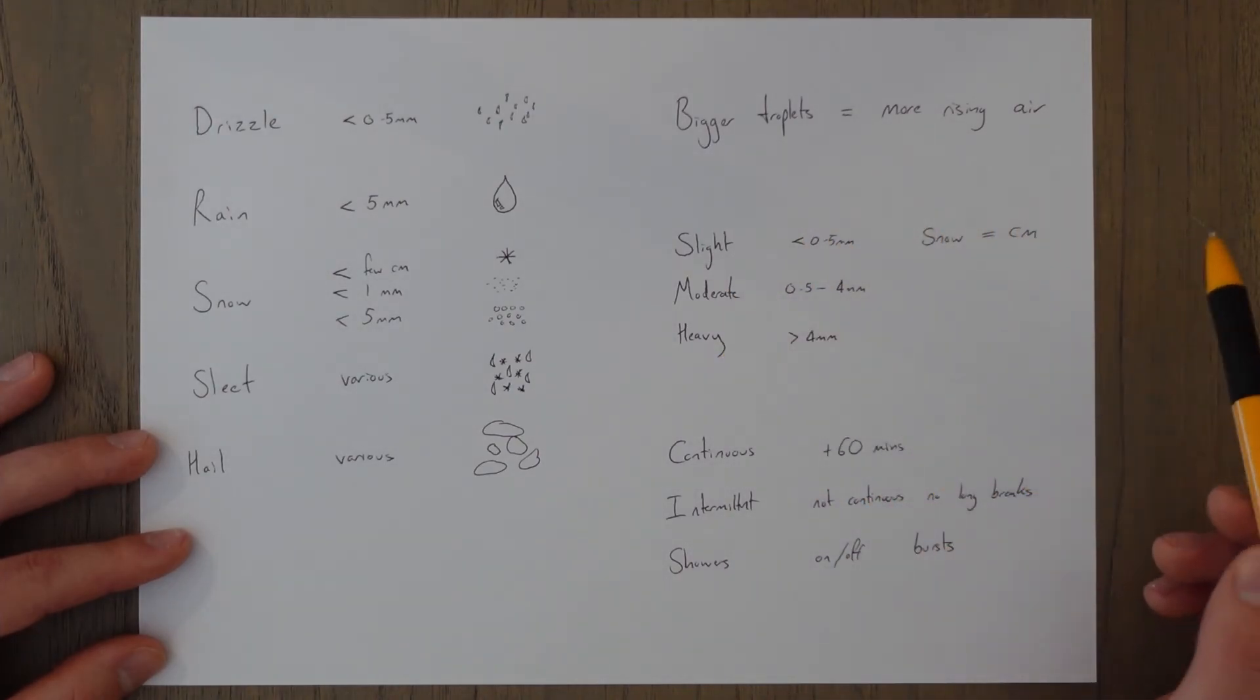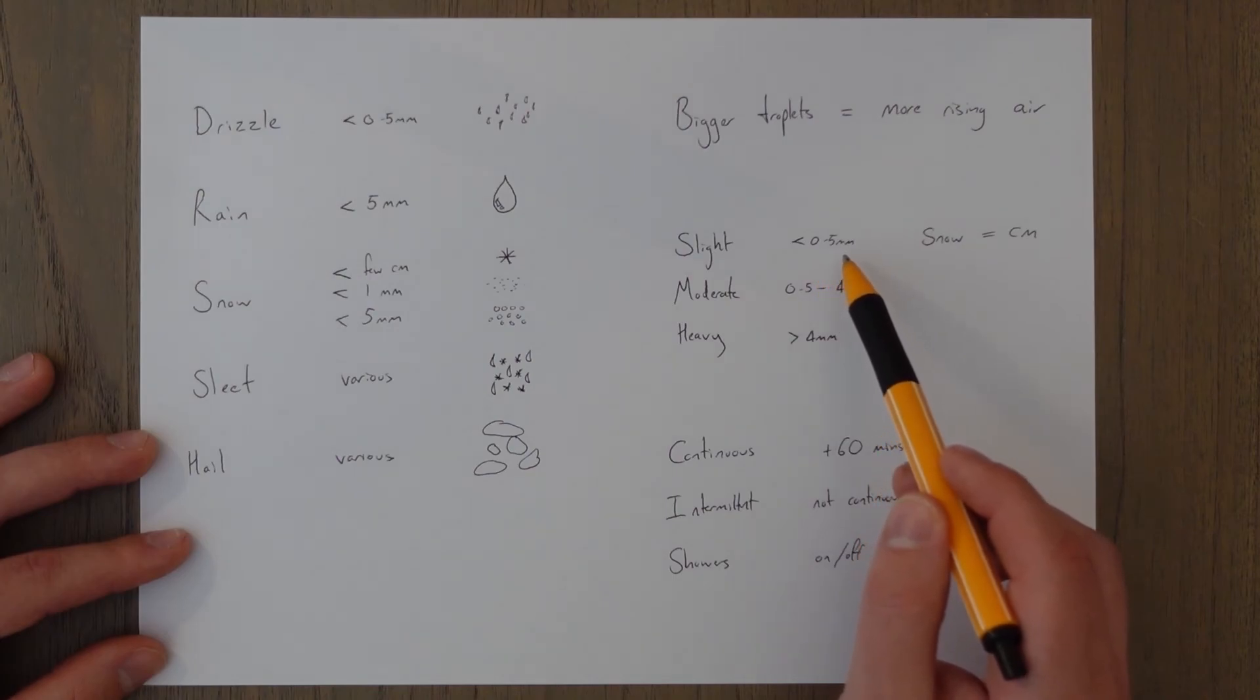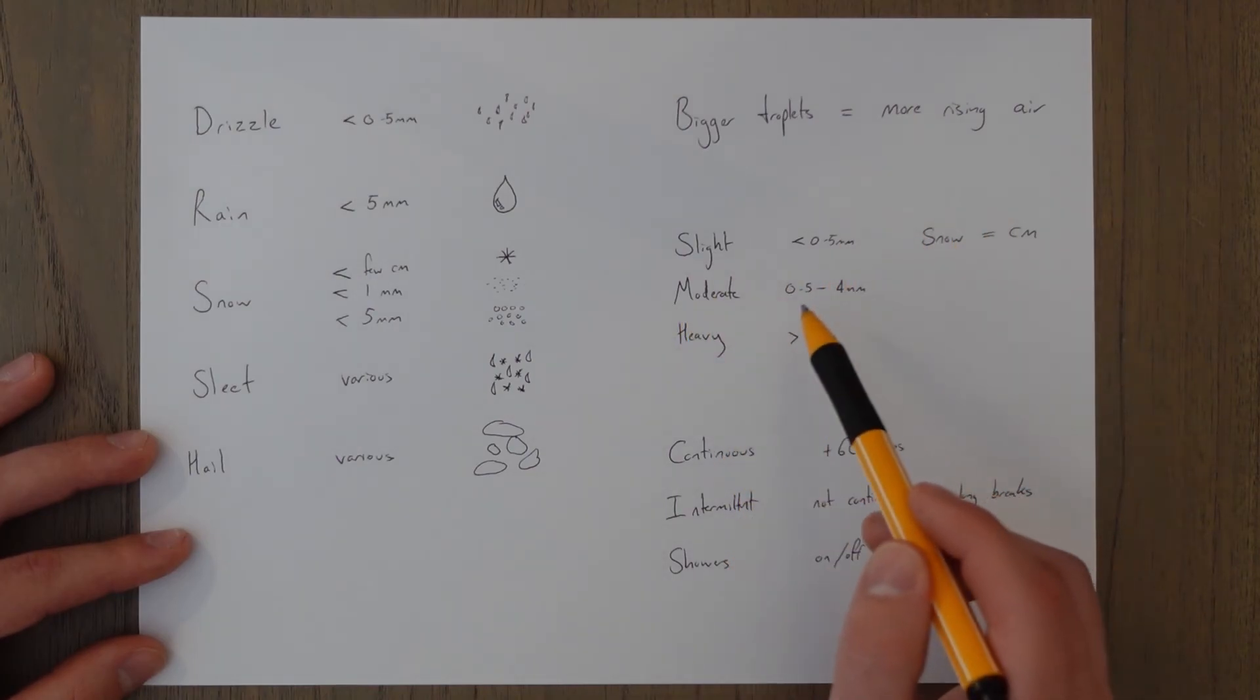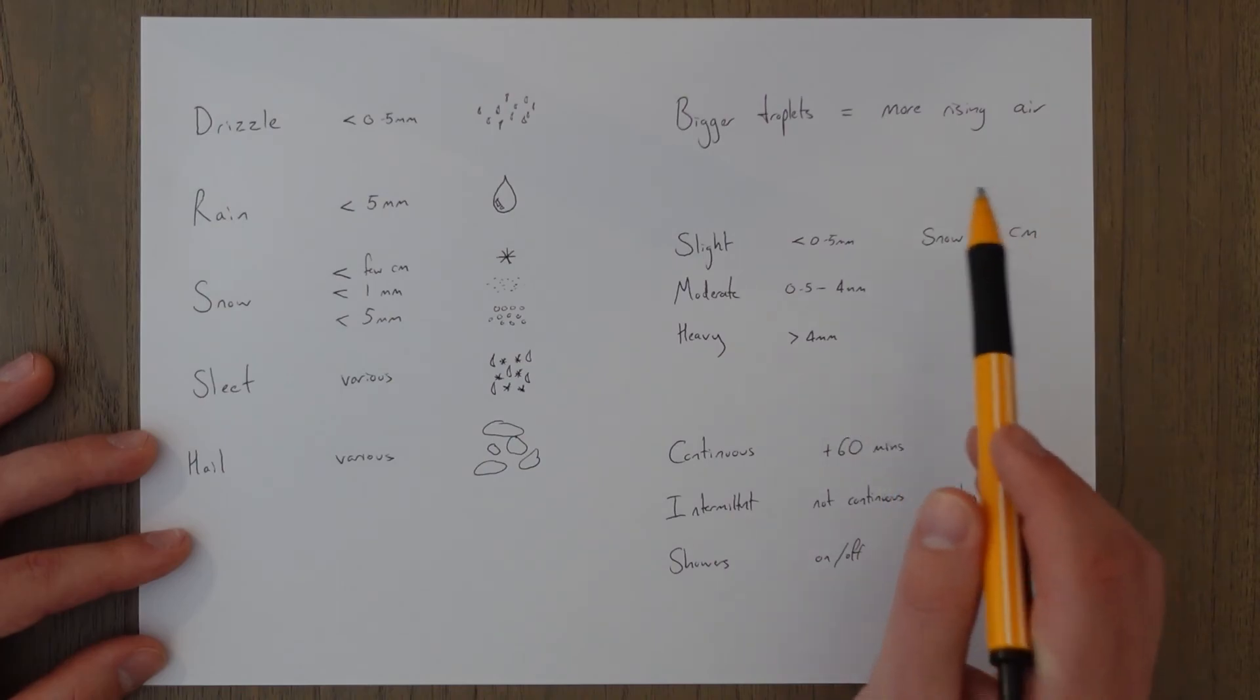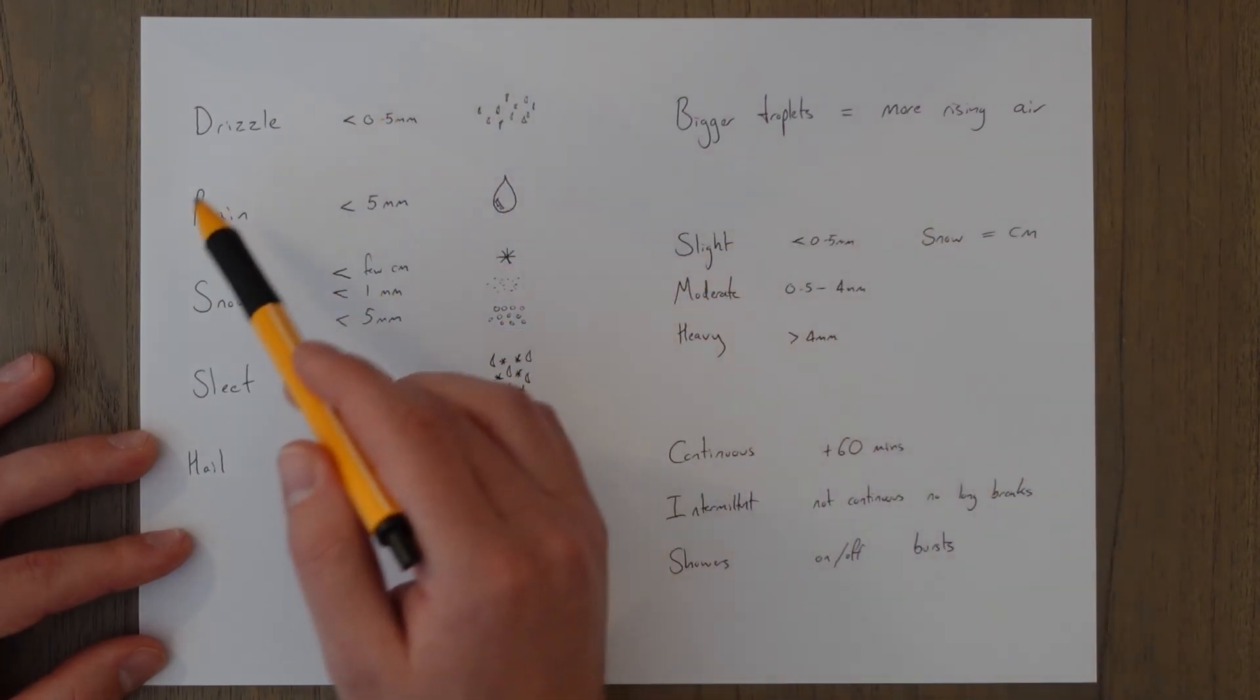In terms of intensity it's all per hour. So you get slight which is less than 0.5 millimeters per hour. Moderate 0.5 to 4 millimeters per hour and heavy is more than 4 millimeters per hour. That would be in terms of the water-based ones, rain and drizzle.